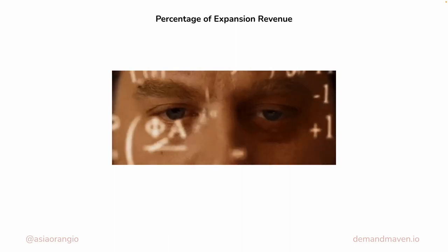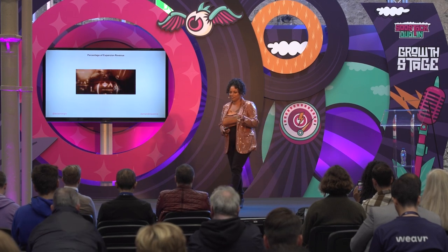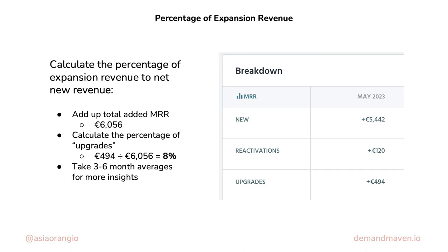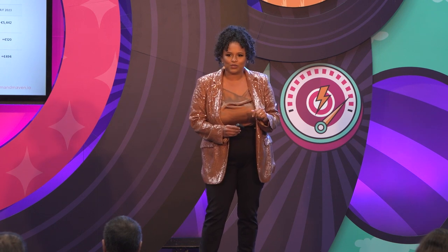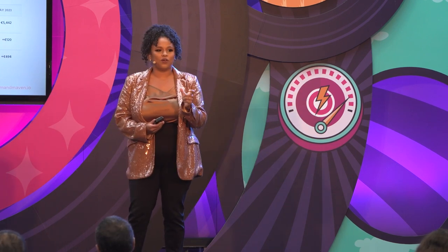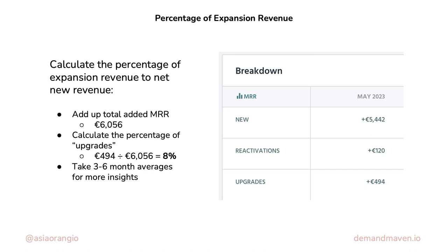The first KPI I want to introduce you to is the percentage of expansion revenue. There's a little bit of math on this one, but it's the only one that requires math. I want you to think about last month's MRR — or the last three to six months. Pull up Profitwell, ChartMogul, Baremetrics, or any of these tools. Look at the total amount of net new MRR, add that up, then calculate how much upgrade or expansion MRR was generated, and divide them.